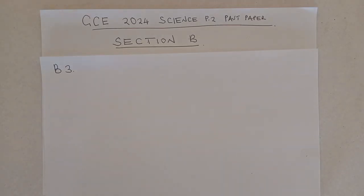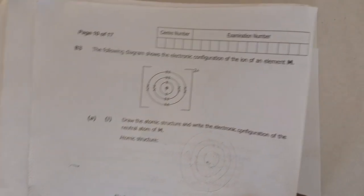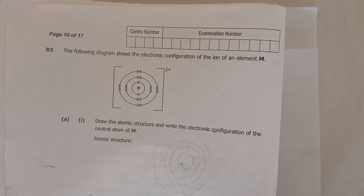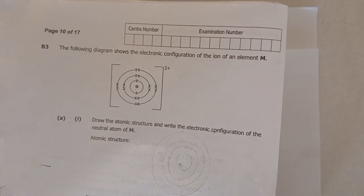Could you please subscribe to my YouTube channel, share, leave a comment and also like the video. We move on to the question. Question B3 reads, the following diagram shows the electronic configuration of the ion of an element M.